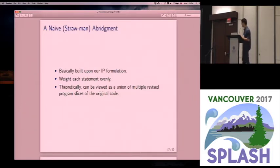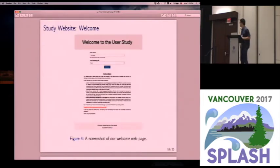And so we also provide a naive abridgment method. We use this as a control group. So basically it builds on top of our integer program formalization, but it weighs each statement evenly. So in another word, it does not apply the knowledge we achieved during our learning procedure. So we just deployed this user study on a website. This is the welcome page for our user study. The participants will know that they will conduct two objective tasks and finally provide some subjective feedback for our tool.